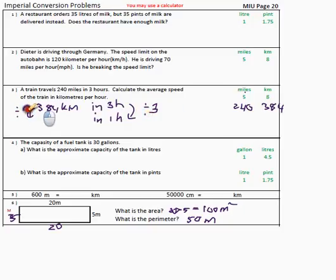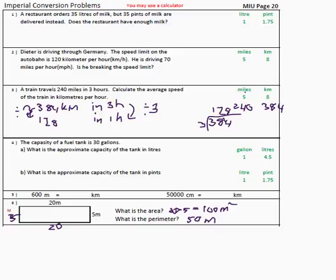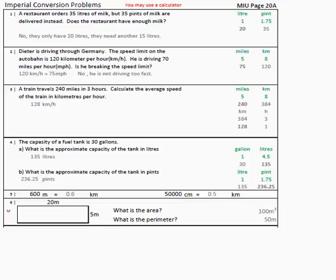So 240 miles is 384 kilometers, and the train goes 384 kilometers in 3 hours. We want kilometers per hour — kilometers in one hour. To get from 3 to 1, divide by 3. So 384 divided by 3 gives 128. Working it out: 3 into 3 is 1, 3 into 8 is 2 remainder 2, 3 into 24 is 8. The answer is 128 kilometers per hour. Pause the video, try the rest. There are the answers — please check. And we've reached the end of the video.